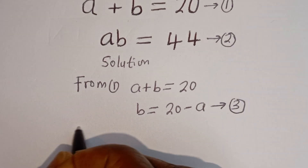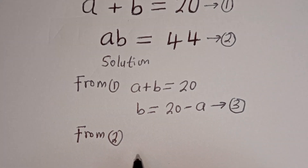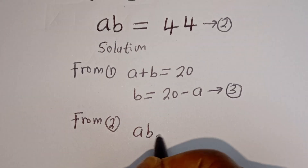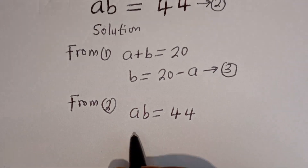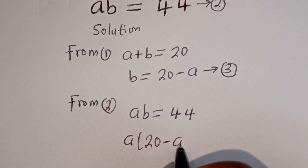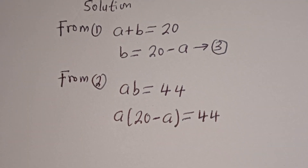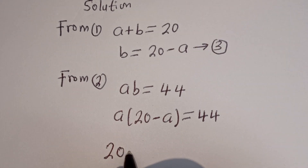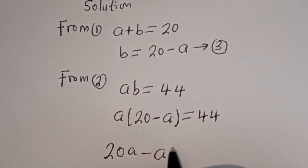Then from equation 2, that is ab is equal to 44. We can then substitute for b: a times bracket (20 minus a) is equal to 44. Let's open the bracket: a multiplied by 20 is 20a, and a multiplied by minus a is minus a squared, is equal to 44.